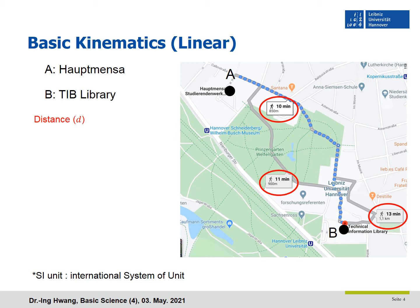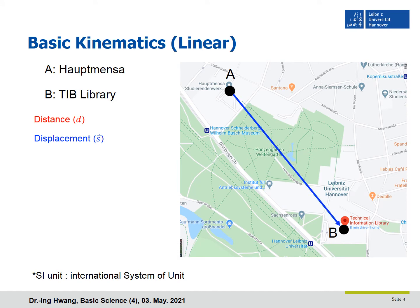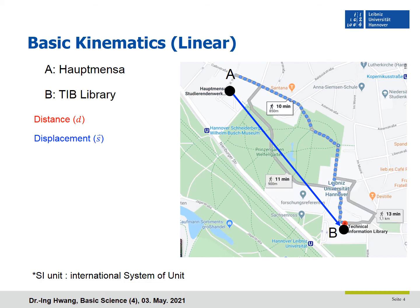If Hanna takes the 850-meter path, Google says she can get to the library in 10 minutes. On the other hand, if we look at the straight path between Haumanza and the library, we can draw a straight line from point A to B. That is the displacement. As you see, the displacement is the shortest path between the two points. Distance can change depending on which path she chooses, but displacement is always the same.